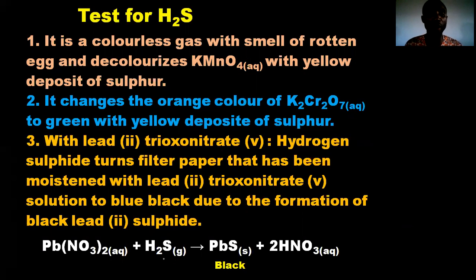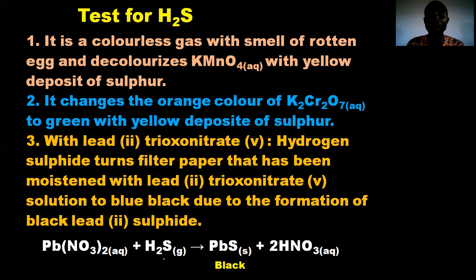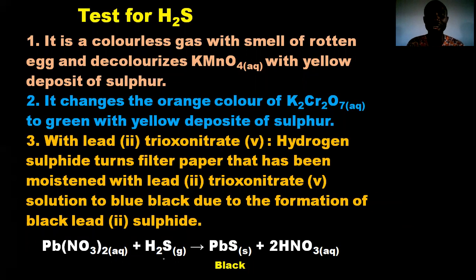To test for hydrogen sulfide: it is a colorless gas with the smell of rotting egg. It decolorizes KMnO₄ with a yellow deposit of sulfur. It changes the orange color of potassium dichromate to green with a yellow deposit of sulfur. With lead(II) trioxonitrate(V) solution, hydrogen sulfide turns filter paper moistened with lead(II) nitrate solution dark/black due to the formation of black lead(II) sulfide.